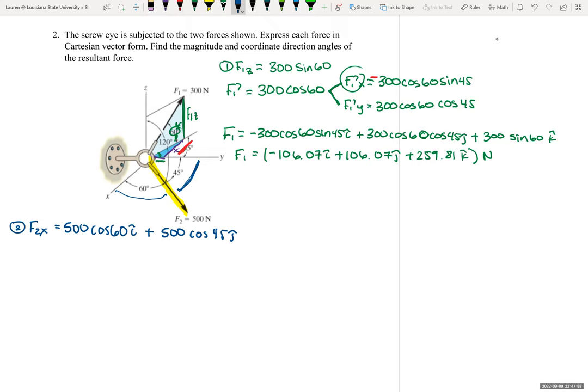And since here is this 120, we are 120 degrees away from the Z axis. And coordinate direction angles, even though this F2 is pointed in the negative Z direction, the angles take care of that negative for you. So it is always positive, and it is always cosine.